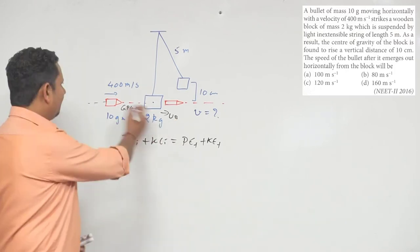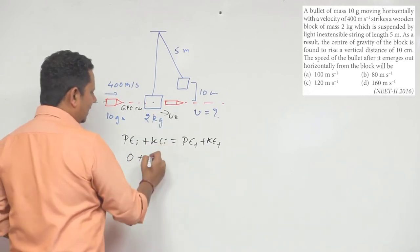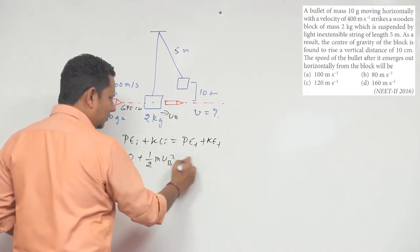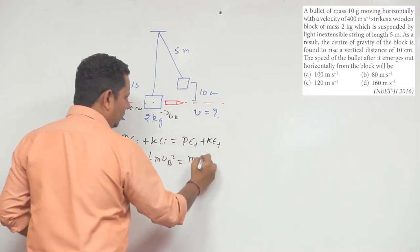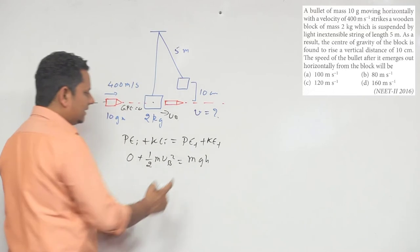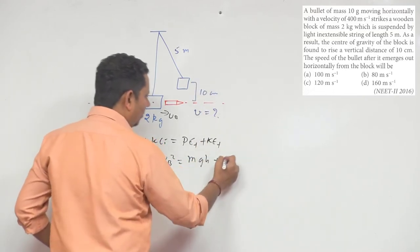times velocity of block squared equals the potential energy. If it rises to this height, it equals mgh where both masses are the block's mass. When it reaches the highest point, its kinetic energy becomes zero. Based on this, m gets cancelled, and